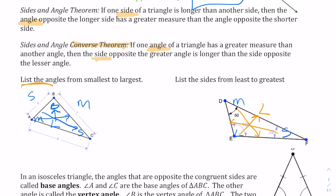So the longest side is DF — opposite the largest angle — the medium side is EF, and the shortest side is DE. To list the angles from smallest to largest: smallest is angle C, then the medium angle A, and then the largest is angle B, which is across from the longest side of 8.